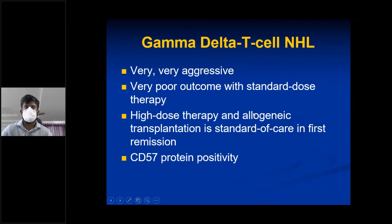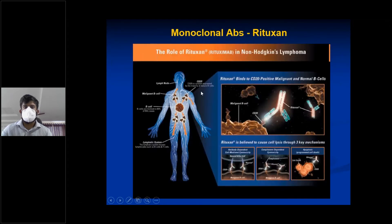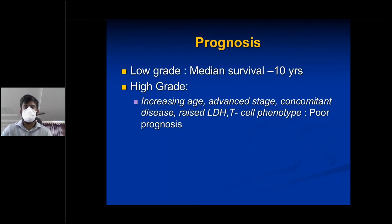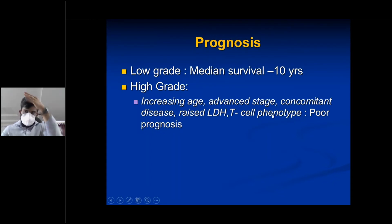Rituximab binds to CD20-positive malignant and normal B-cells and causes cell lysis through three key mechanisms. It is useful in both Hodgkin's lymphoma and non-Hodgkin's lymphoma. Prognosis: low-grade lymphoma has a median survival of 10 years. High-grade lymphoma, with factors such as increasing age, advanced age, concomitant disease, raised LDH, and T-cell phenotype, carries poor prognosis with median survival of less than 1 year.